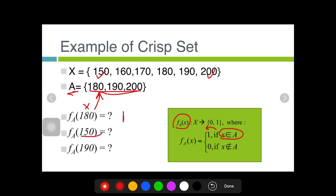What about 150 now? Since x=150 is not the element of A, then it will return zero.